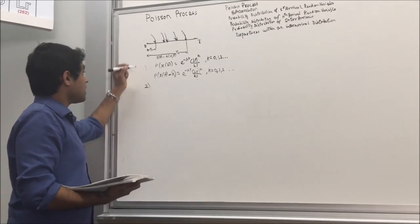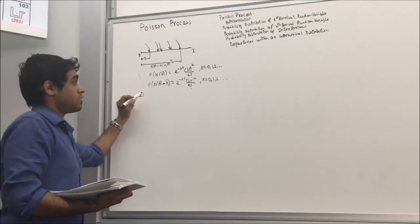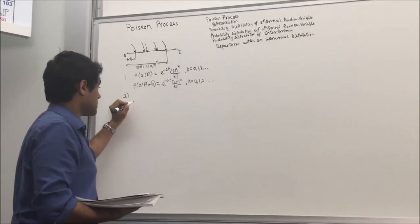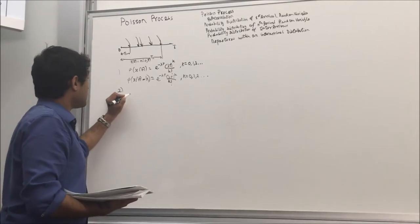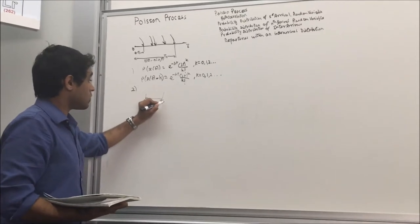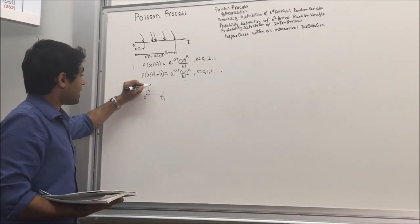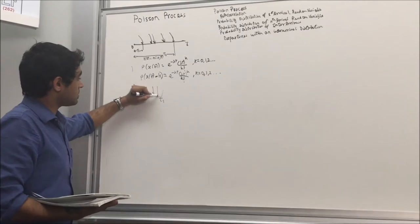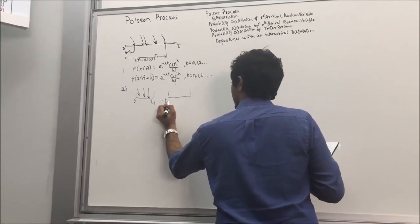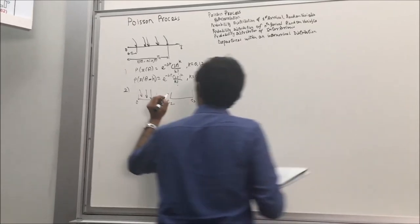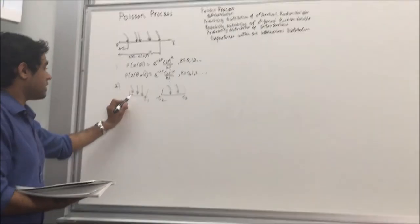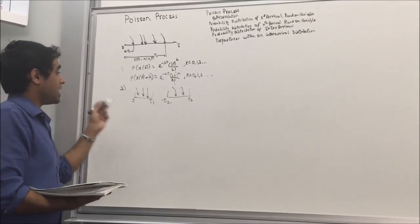The second property of a Poisson process is that if there are two non-overlapping processes — say a Poisson process from 0 to t1 with some arrivals, and another Poisson process from t2 to t3 with its own arrivals — if they are non-overlapping, then they are independent.